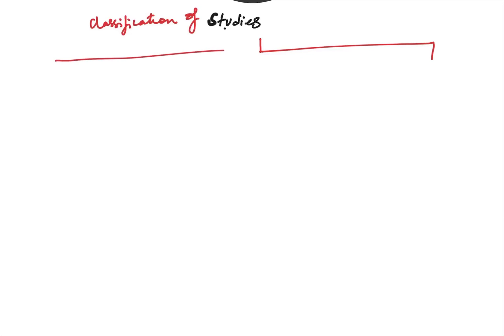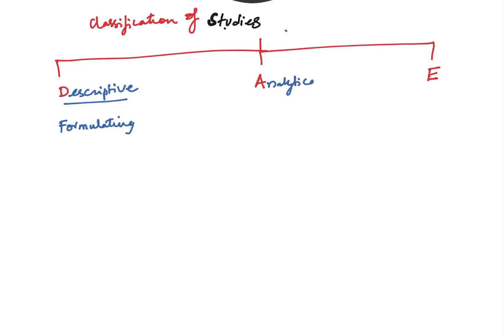Today we'll discuss the classification of studies. Studies are classified into three main types: descriptive, analytical, and experimental. Descriptive studies help in formulating a hypothesis, analytical studies help in testing the hypothesis, and experimental studies help in confirming the hypothesis.